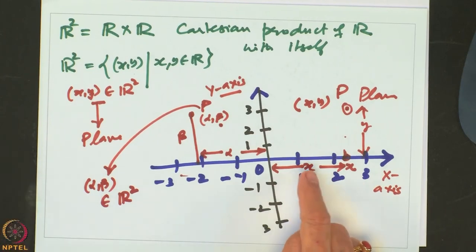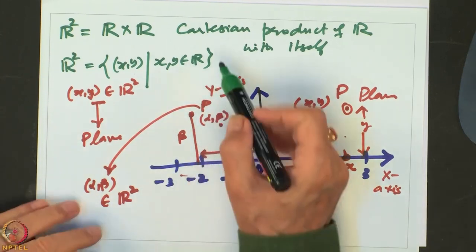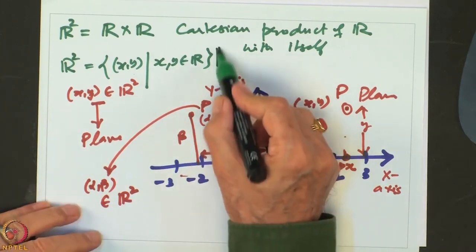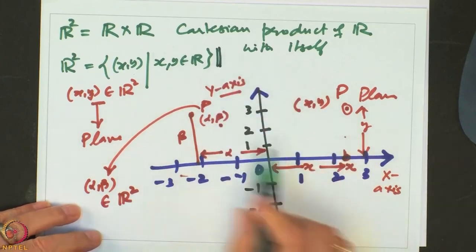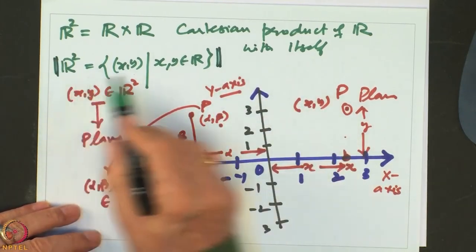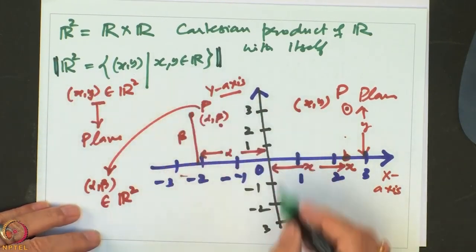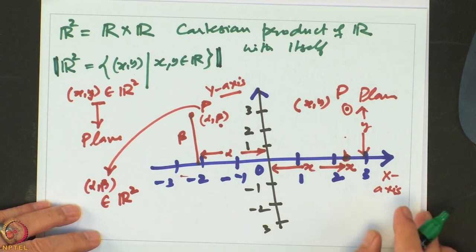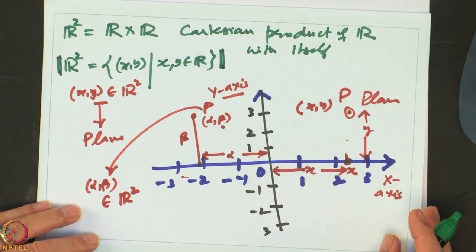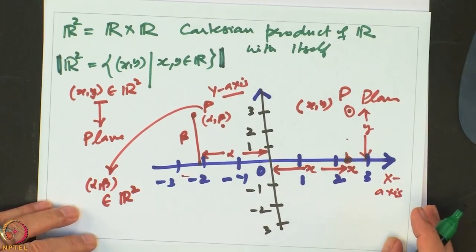This is the set-theoretic representation as a set and this is the geometric representation of the plane as a set of points. We will use this to represent the graph of a function, so let us take a graph of a function.